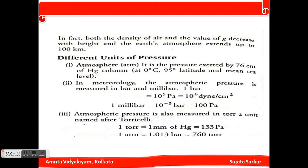There are different units for pressure. One atmosphere is the pressure exerted by 76 centimeters of mercury column at zero degrees centigrade, at 45° latitude and mean sea level. In meteorology, atmospheric pressure is measured in bar and millibar. Atmospheric pressure is also measured in torr, a unit named after Torricelli. 1 torr equals 1 millimeter of mercury.